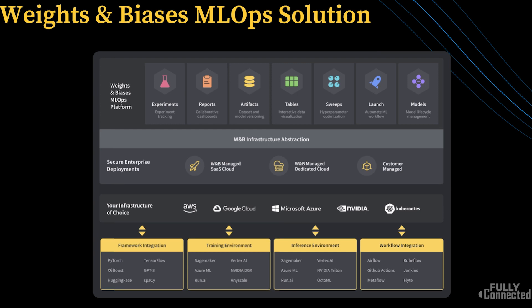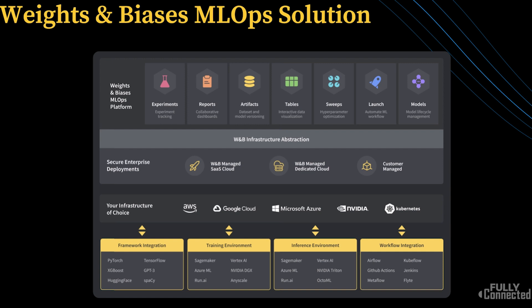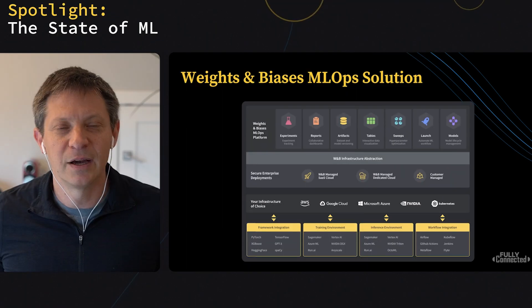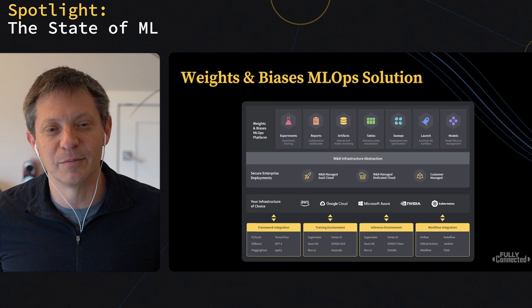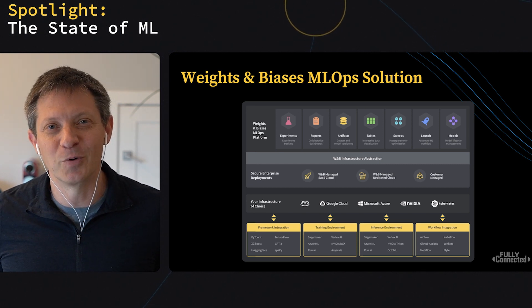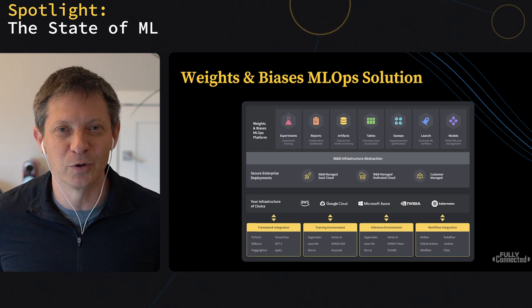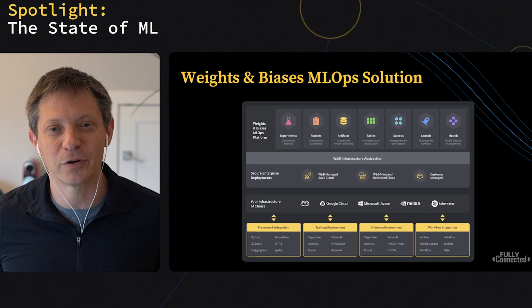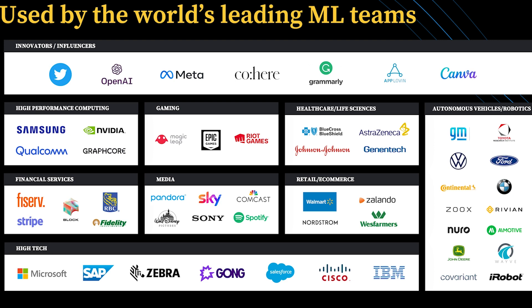Hopefully I don't need to remind you what Weights and Biases does, but I'll spend a quick second doing that anyway. We are an end-to-end ML ops solution that enables ML practitioners to train their models from definition all the way through production. We have a number of products, including experiment tracking, collaborative reports, artifacts that let you version both your datasets and your models, interactive data visualizations with tables. We recently launched our workflow automation system Launch, and you can host Weights and Biases on a variety of cloud environments as well as on-premise. And we integrate with thousands of frameworks and libraries, some of which we will discuss in this State of ML report, and we're honored to be used by some of the world's leading ML teams across a broad basis of industries and use cases.